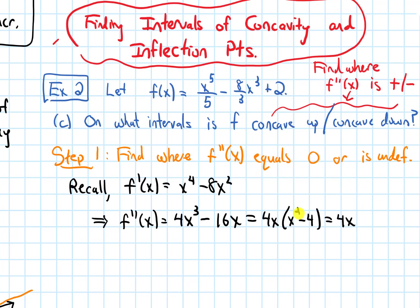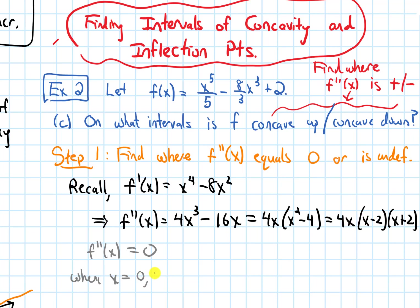So we have 4x times x squared minus 4, and x squared minus 4 factors as x minus 2 times x plus 2 — that's the difference of squares. Our second derivative equals 0 when x equals 0 (from 4x), x equals 2 (from x minus 2), and x equals negative 2 (from x plus 2). The second derivative is never undefined.